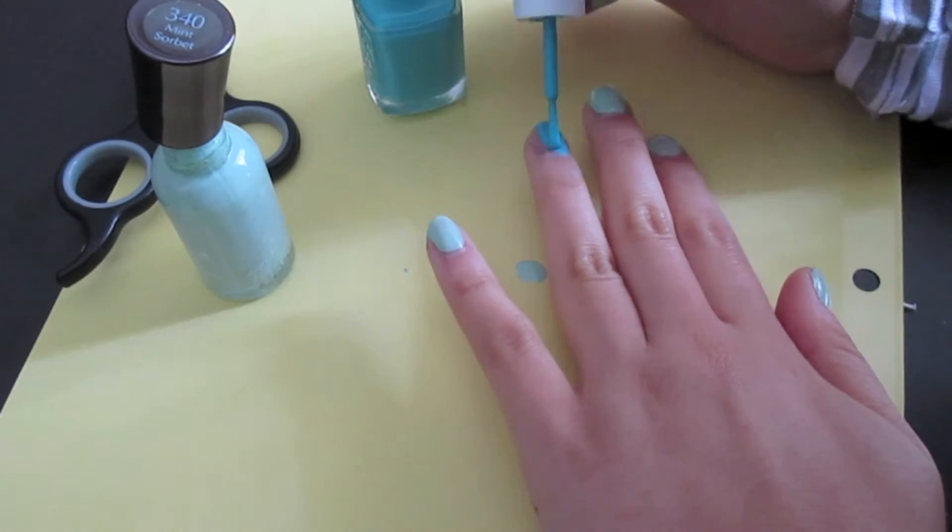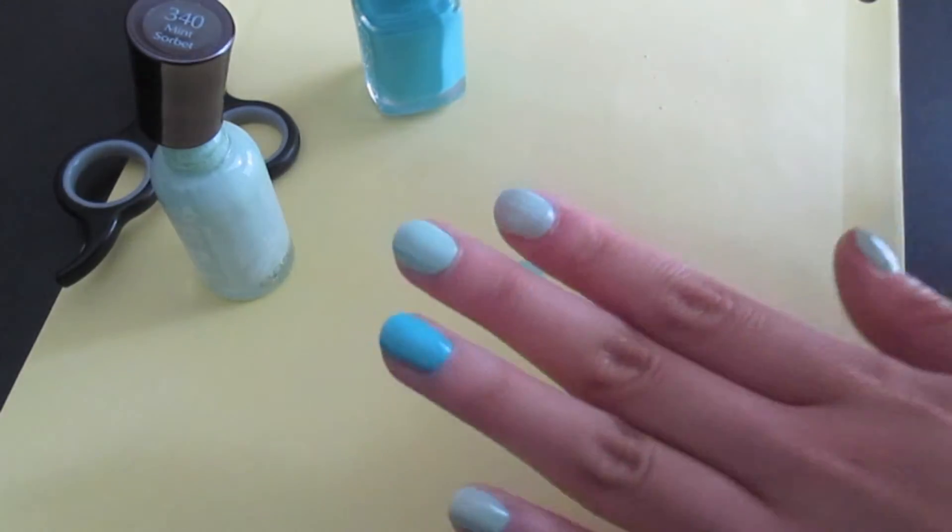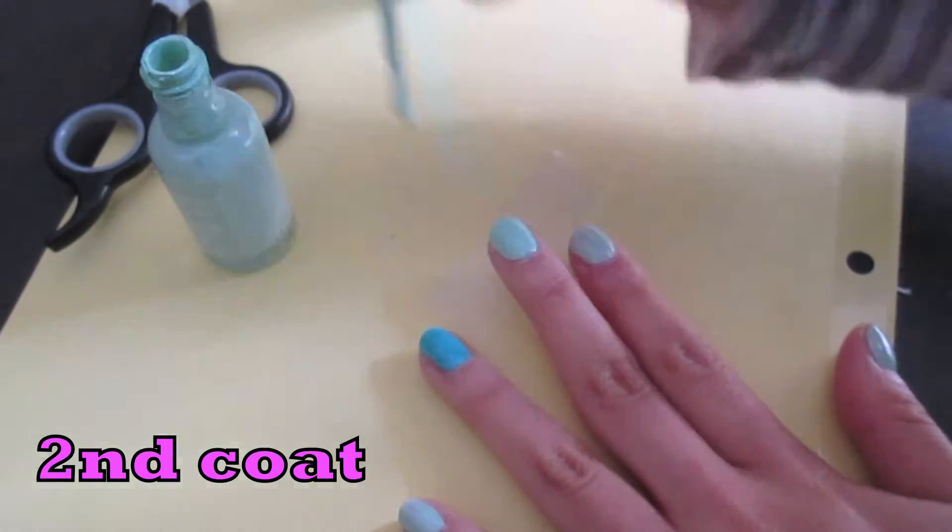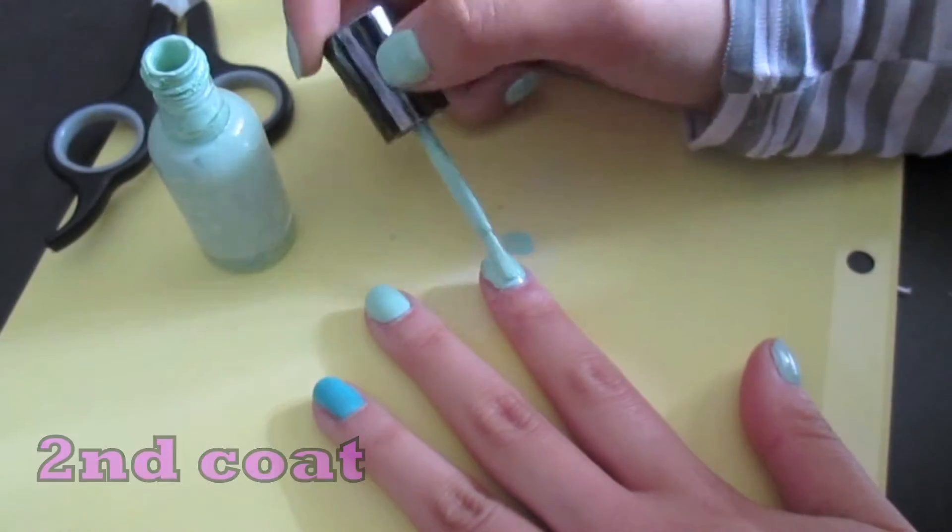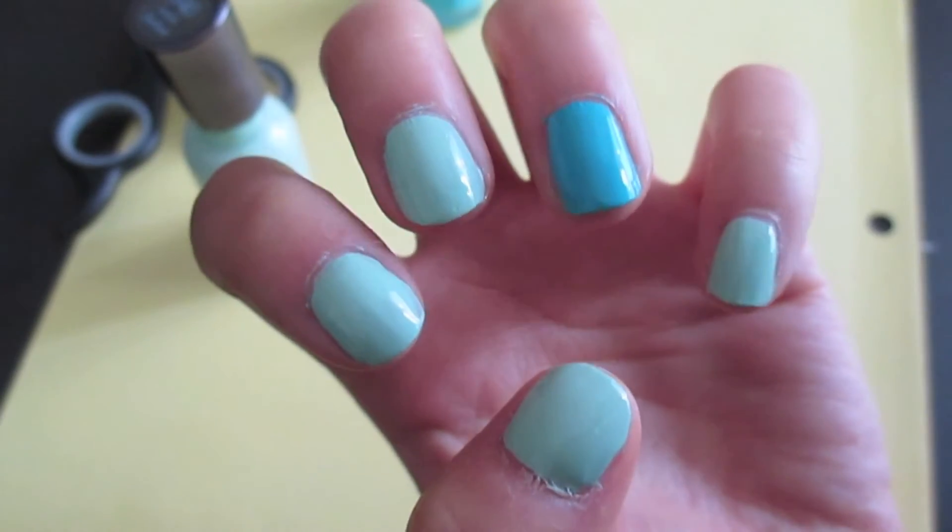Apply the darker color to the fourth finger. Then go ahead and apply a second coat to all the nails. They should look something like this, now let them dry.